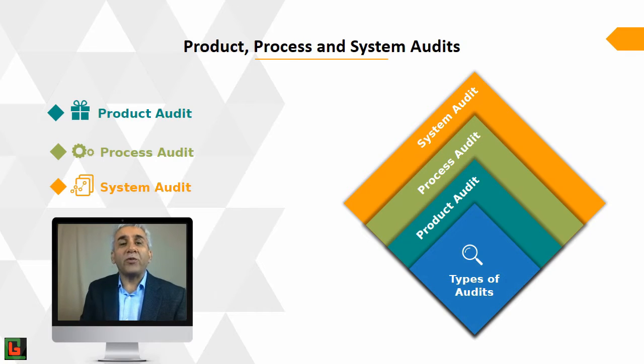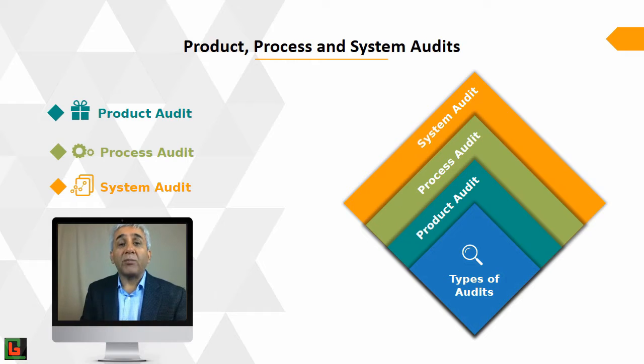Based on the scope of the audit, an audit can be classified into three different categories: the product audit, the process audit, or the system audit.